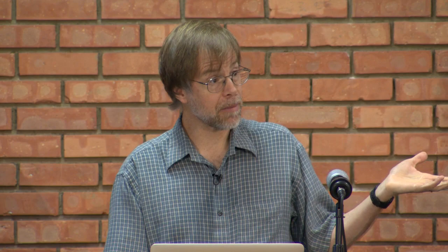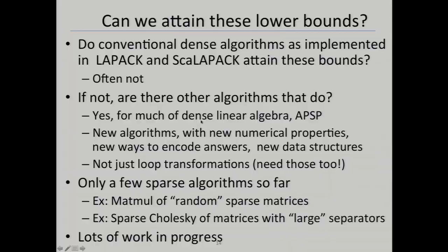Can we attain these lower bounds? When we got them, we went back and looked at LAPACK and ScaLAPACK. The answer was they generally don't attain the lower bounds. So we decided we better reinvent everything. It's not just loop transformations—not just doing the same numerical algorithms in a different order. It required new numerical algorithms with new numerical properties, new stability properties, new ways to encode the answer, and new data structures. We've had the most success in the dense case; the sparse case is much more challenging.